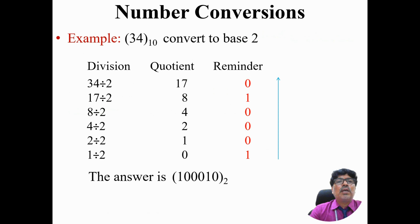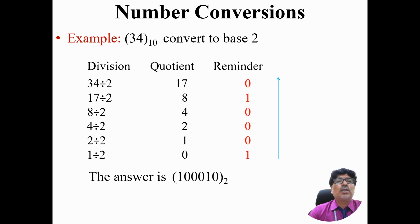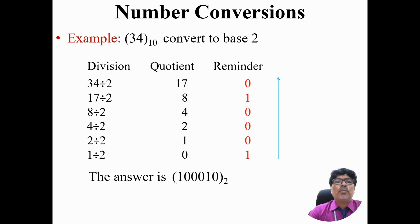Let's look at one more example converting a base 10 value to base 2. The same division procedure is followed. Take the number 34, divide by 2 — quotient is 17, remainder is 0. Then 17 divided by 2 gives quotient 8 and remainder 1. This process continues until the quotient reaches 0.